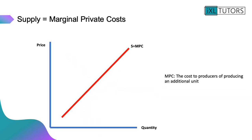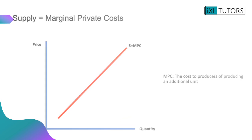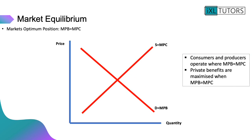The supply curve becomes the Marginal Private Cost (MPC) curve — the cost to producers of producing an additional unit. A market is in equilibrium where supply equals demand, so the market is also in equilibrium where MPC equals MPB. Consumers and producers operate at the point where MPB equals MPC, and private benefits are maximised at that point — that is the market's optimal position.